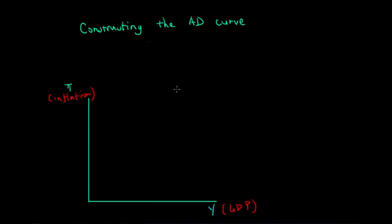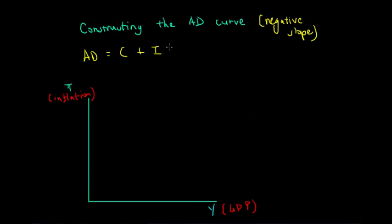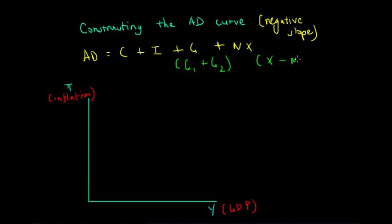In this lecture we will be constructing the aggregate demand curve and examining why it has a negative slope. The aggregate demand curve is a component of consumption expenditure plus investment expenditure plus government expenditure, which can be broken down into G1 (government current expenditure) and G2 (government non-current or capital expenditure), plus net exports, which is exports minus imports.